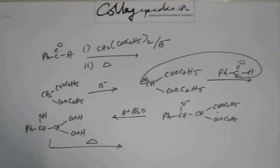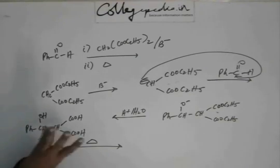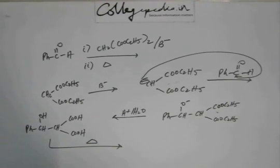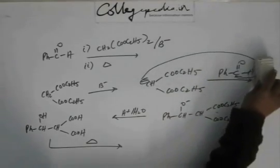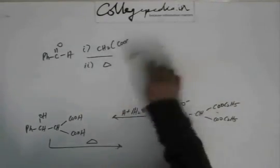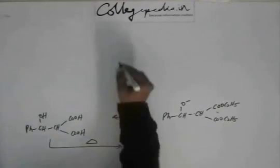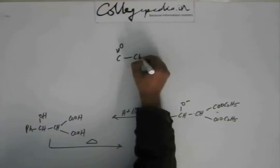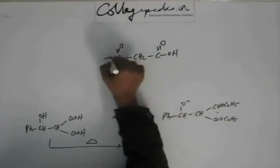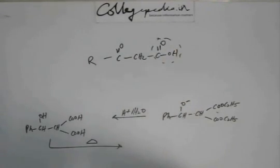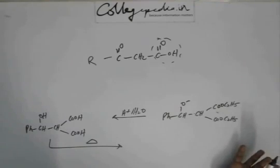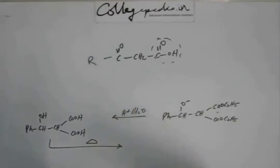Think of a reaction we have studied in which we added heat. In aldol condensation, heat caused elimination. In Perkins condensation, water came out. But there are also other reactions in which we added heat — like beta-keto-acid decarboxylation. In that reaction, when we added heat, CO2 came out. We had a keto group at the beta position, and this CO2 went away as carbon dioxide gas. So in the case of beta-keto-acid, decarboxylation occurred.